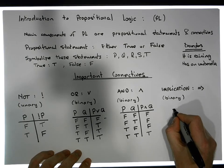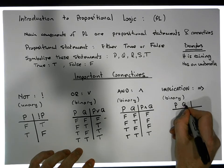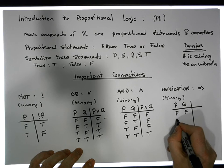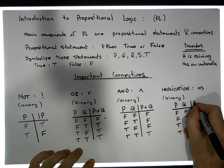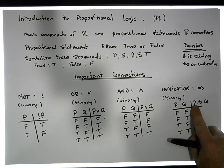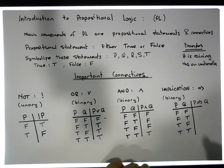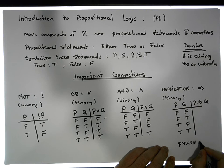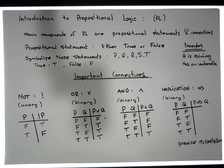The implication operator is a little bit more tricky to understand. It takes two propositions P and Q, which can be false-false, false-true, true-false, or true-true. P implies Q has a truth value dependent on both operands. The left operand is called the premise and the right operand is called the conclusion. The rule is that an implication is only ever false when the premise is true and the conclusion is false.